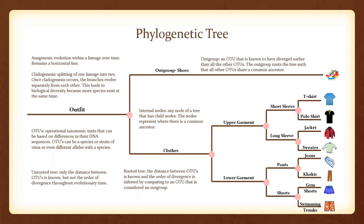Let's start off with anagenesis versus cladogenesis. Anagenesis is the evolution within a lineage over time; in a phylogenetic tree, the lines remain horizontal. Cladogenesis, on the other hand, is the splitting of one lineage into two. Once cladogenesis occurs, the branches evolve separately from each other, leading to biological diversity because more species exist at the same time.